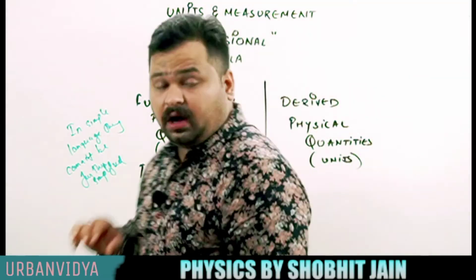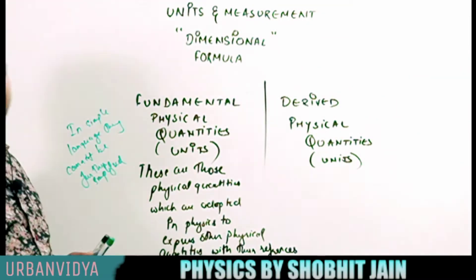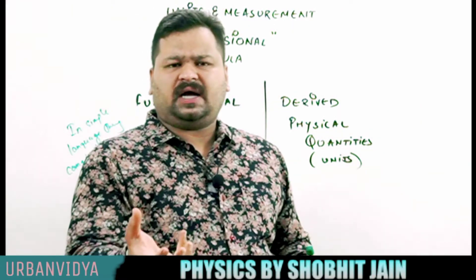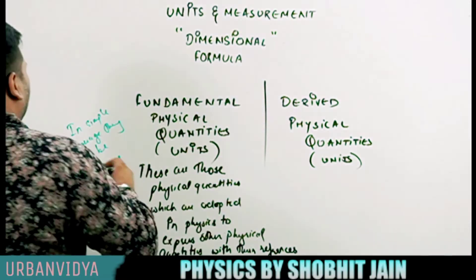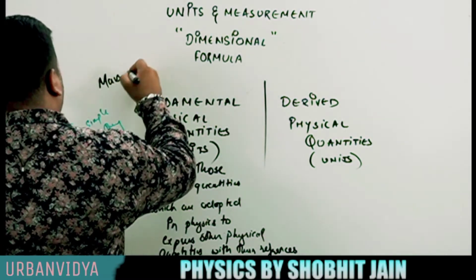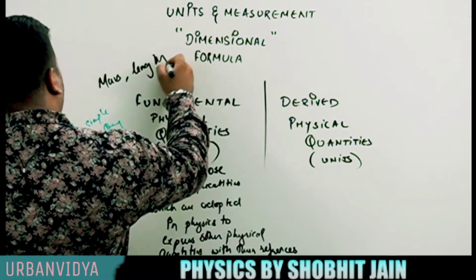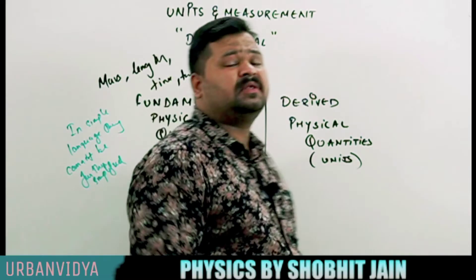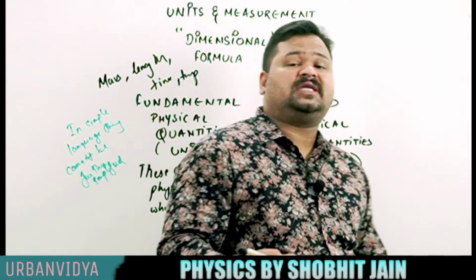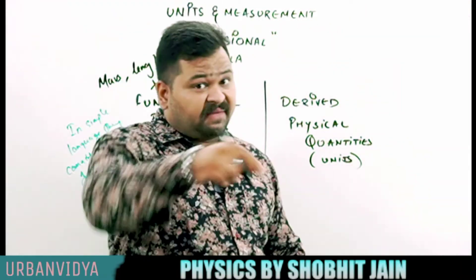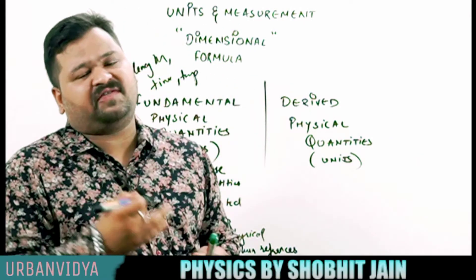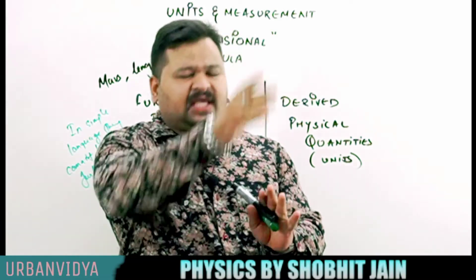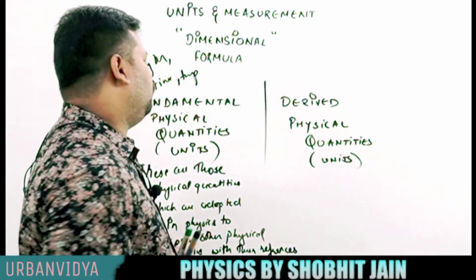Examples of fundamental physical quantities are: mass, length, time, temperature, and more. Before seeing all of them in detail, you need to understand what derived physical quantities are. Then we will look at which fundamental physical quantities we need to study in the SI unit system.